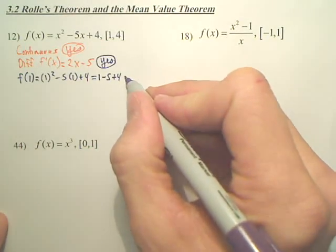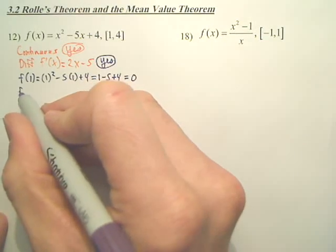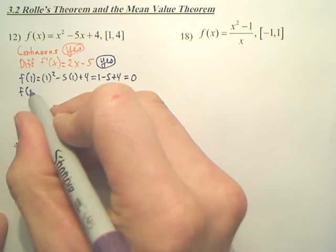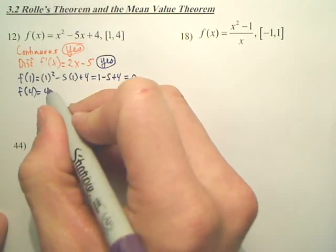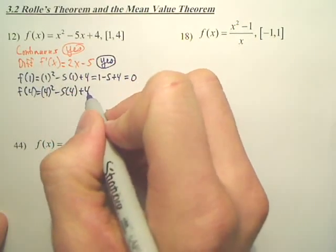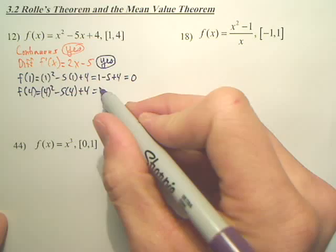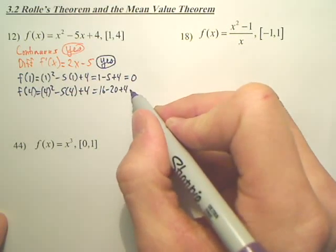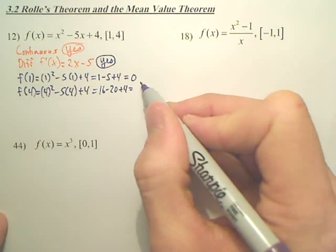That looks like we got 1 minus 5 plus 4 is 0. We got 16 minus 20 plus 4. Is that 0?